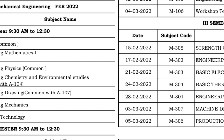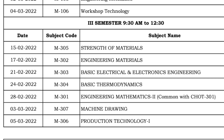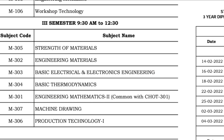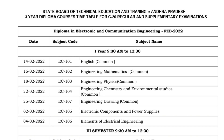Next, Mechanical Engineering third semester — same morning section, 9:30 to 12:30. Starting 15th: Strength of Materials on 15th, Engineering Materials on 17th, Basic Electrical and Electronic Engineering on 21st, Basic Thermodynamics on 24th, Engineering Mathematics 2 on 28th, and Machine Drawing and Production Technology in the third month.